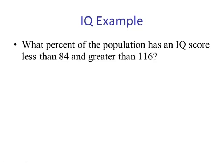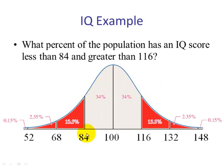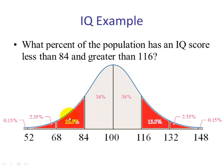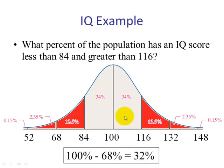What percent of the population has an IQ score less than 84 or greater than 116? From the previous example, we know between 84 and 116 is 68%. We are wanting less than 84 and greater than 116 — the two tails. These three regions — left tail, middle, and right tail — add up to 100%. So if the middle is 68%, we take 100% minus 68% and get 32%. So 32% of the population will have an IQ score less than 84 or greater than 116.